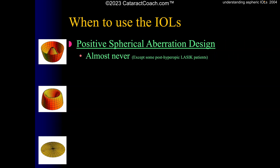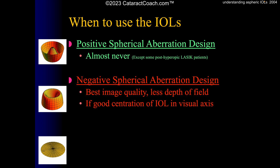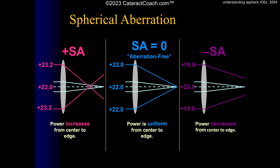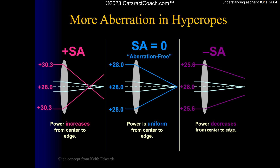When should you use these lenses? A positive spherical aberration design is almost never needed — except possibly in post-hyperopic LASIK patients where the cornea has negative spherical aberration. Negative spherical aberration lenses provide the best image quality with a little less depth of field — a fantastic choice with good IOL centration. Zero spherical aberration (aberration-free) lenses give good image quality and good depth of field, and centration is not as critical. Note: in higher-power IOLs such as 28 diopters, the dioptric power differences from center to edge are more pronounced.